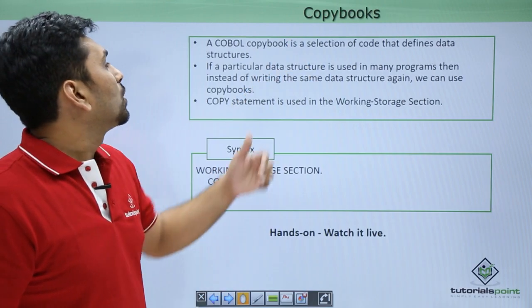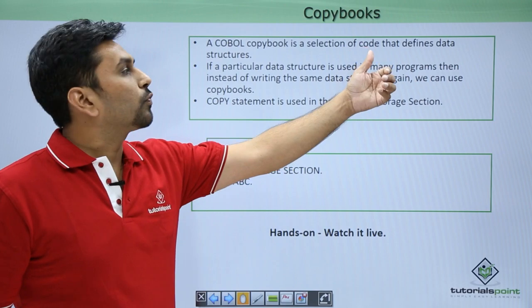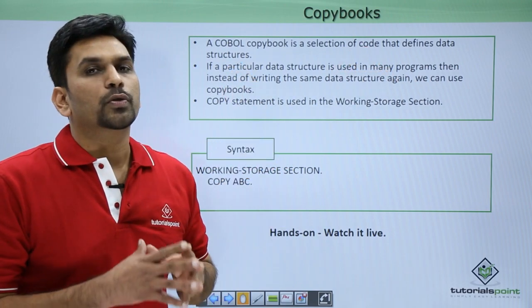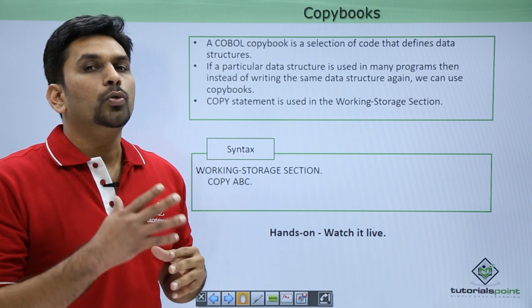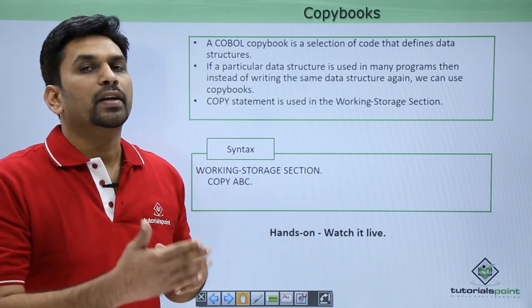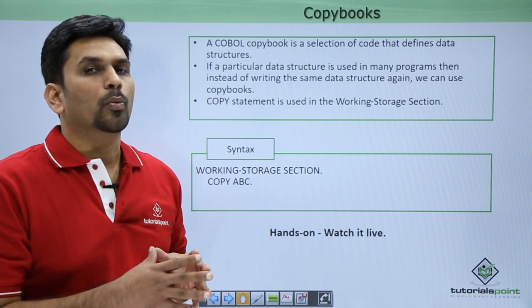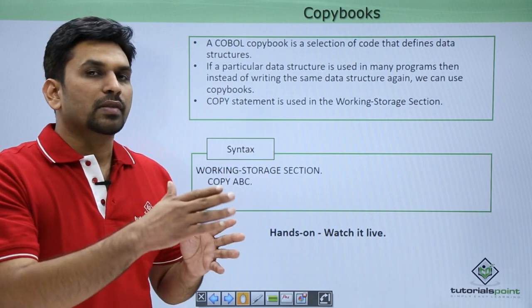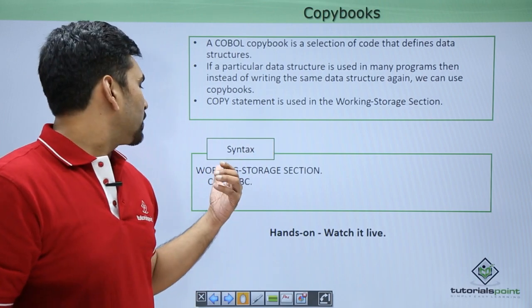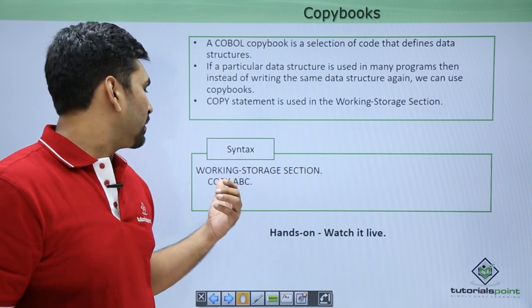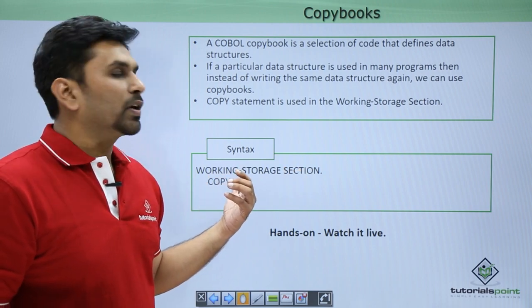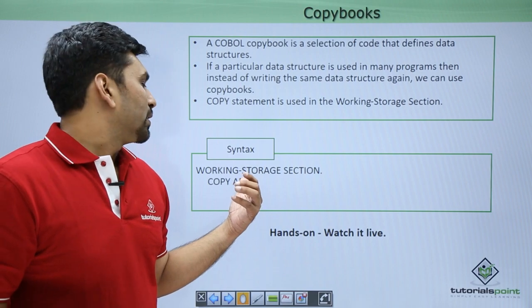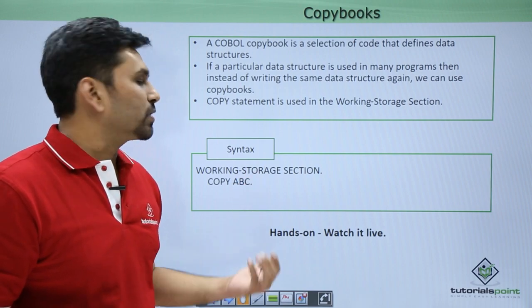Next we have copybooks. A COBOL copybook is a selection of code that defines a data structure. If many programs use the same data structure, you do not need to write it again and again. Instead, you can create a copybook and simply use the COPY command, and that same structure will be pasted into your program. Here you can see in the working storage section we just write COPY ABC, and whatever data structures are present in ABC will be copied into our working storage section.